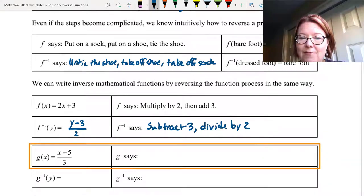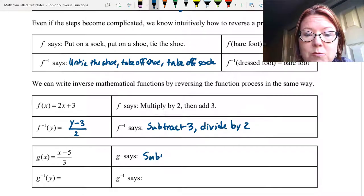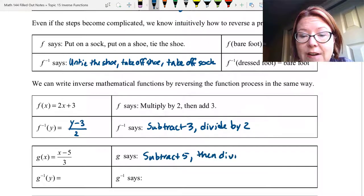Let's say g of x starts with a fraction with x minus 5 in the numerator and 3 in the denominator. Right now g says take some value x and first subtract 5, then divide by 3.